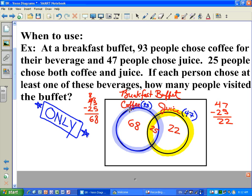Once the diagram is filled in, we do not have to worry about anybody not partaking in choosing one of the two beverages because of this last sentence right here, stating that each person chooses at least one of these beverages.